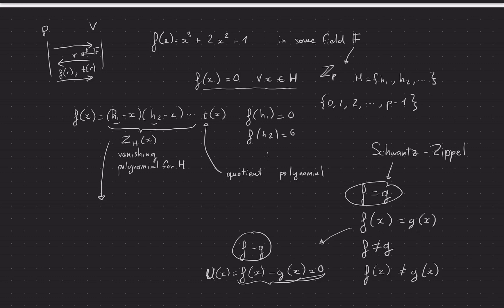Of course I do not know t - that's because maybe I don't know f or something like that. And so then I receive f(r), I'm like okay cool. Is it equal to z_H(r), which I can calculate myself because I know r as the verifier, times t(r) which you just gave me?